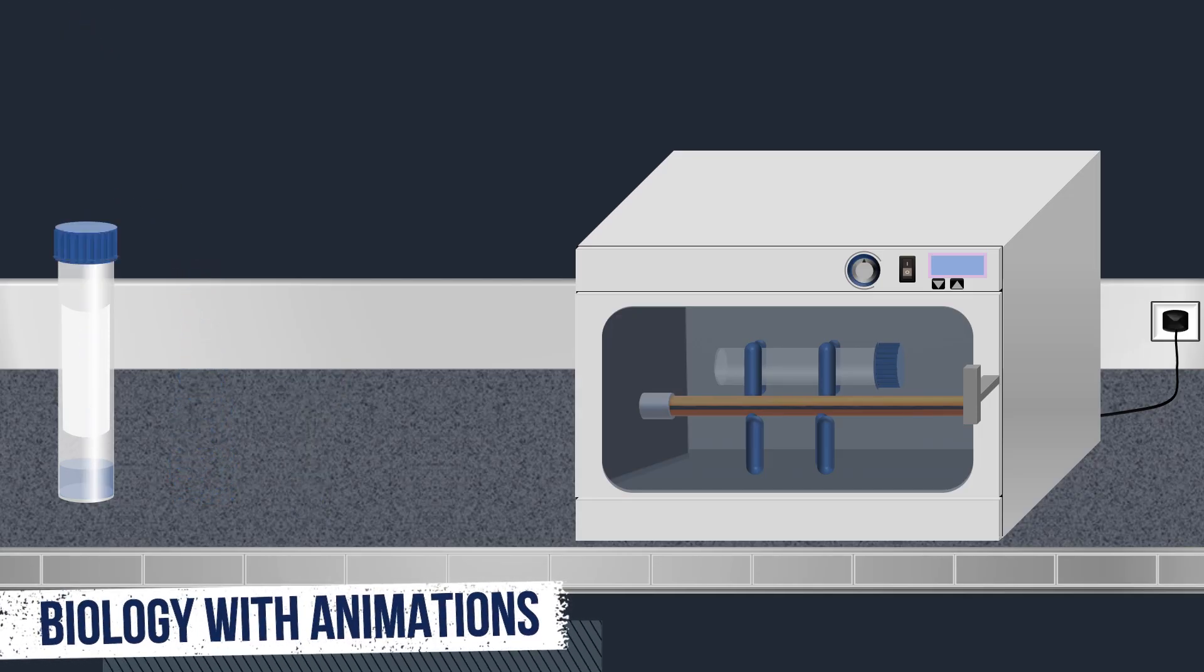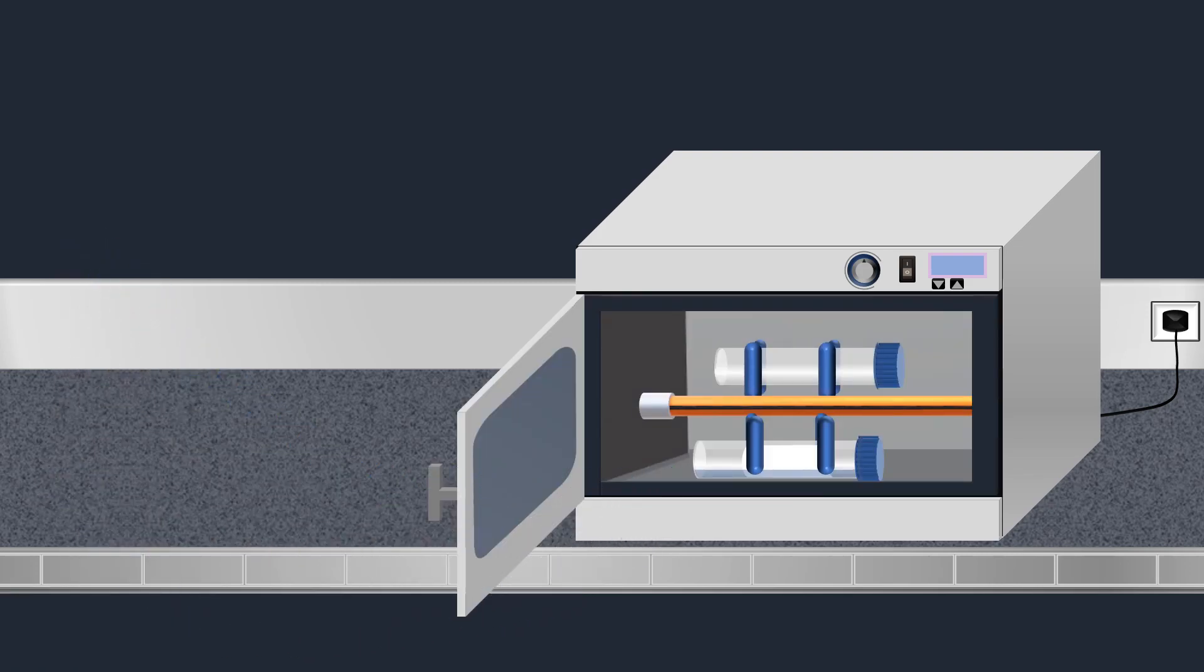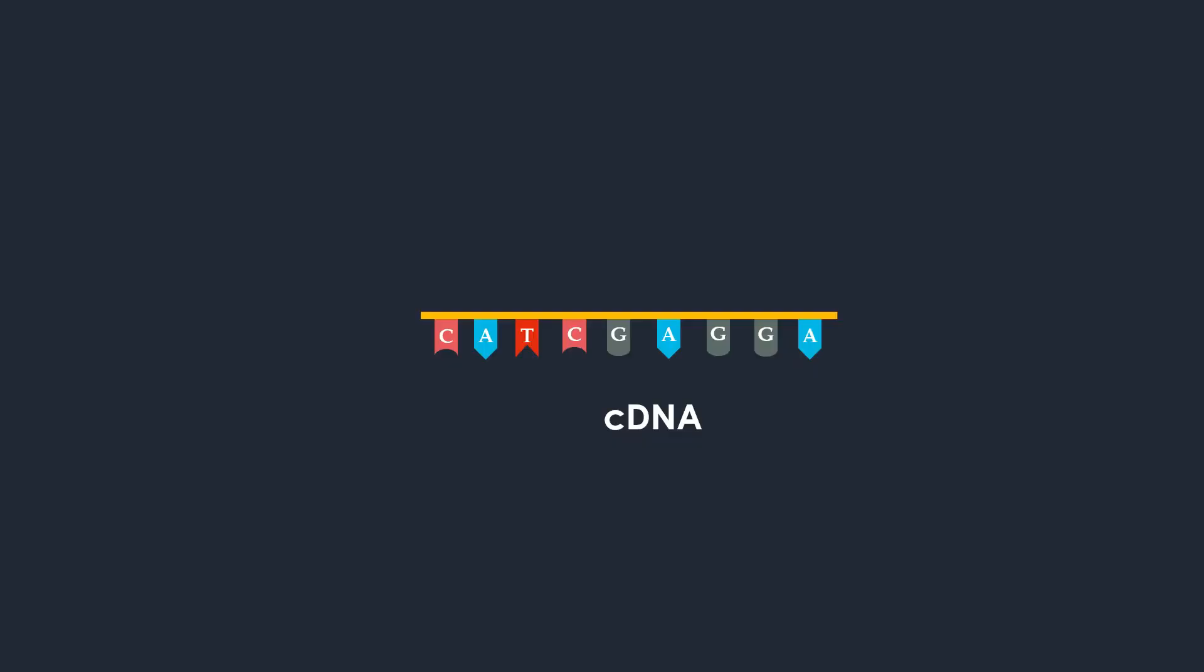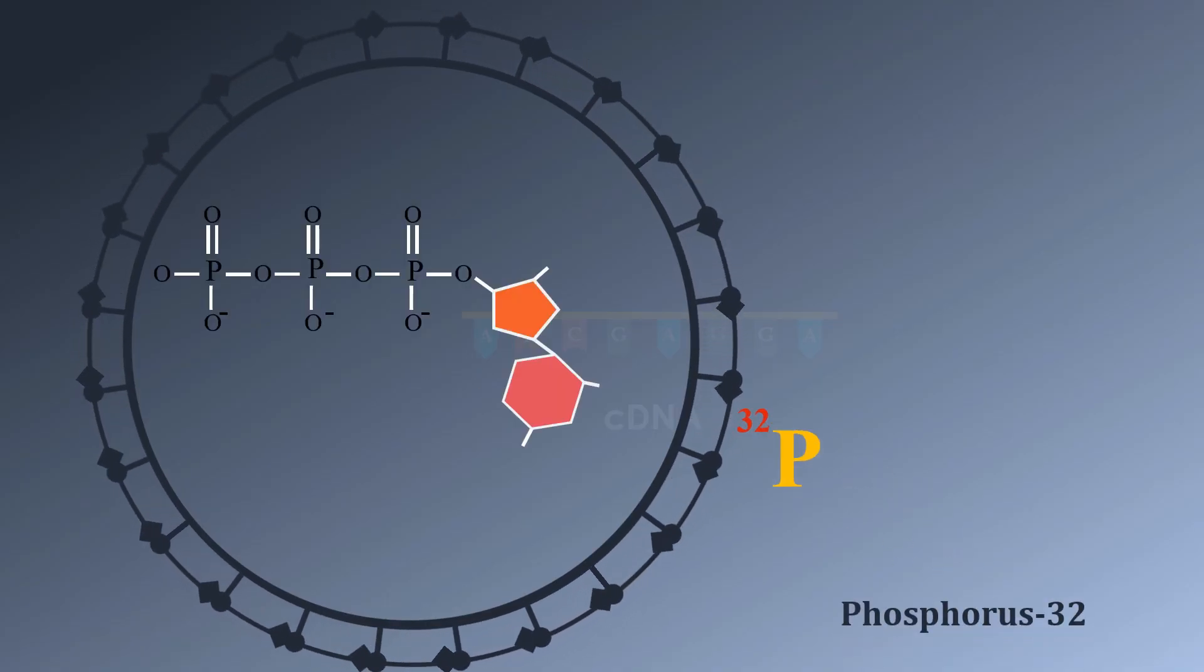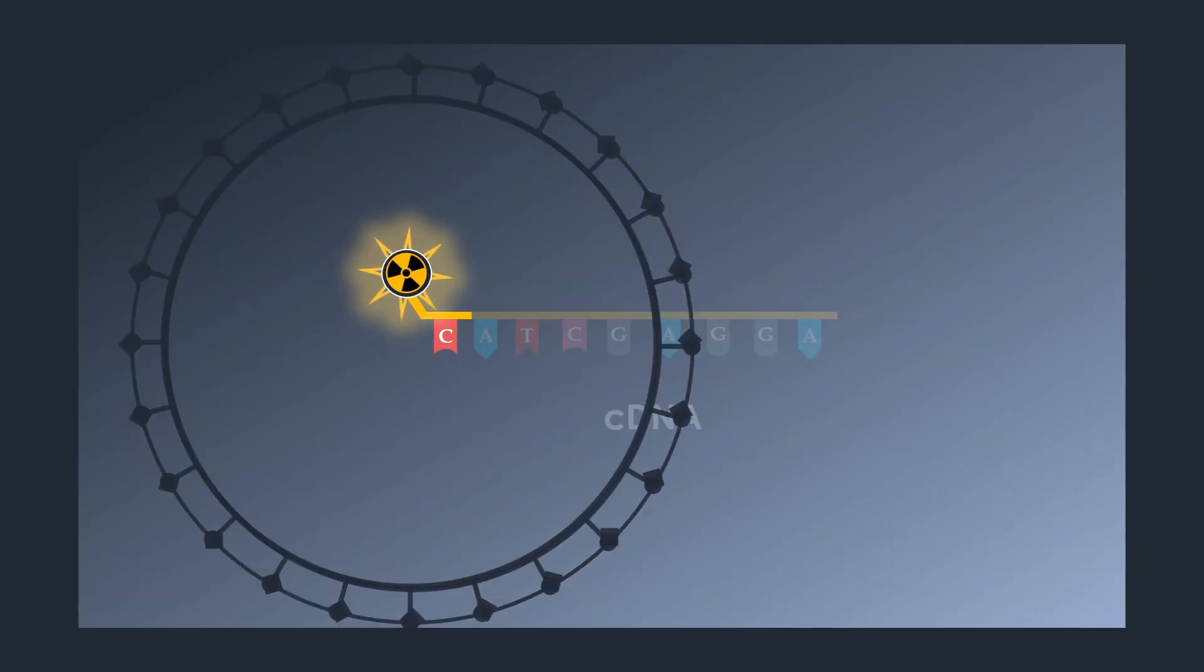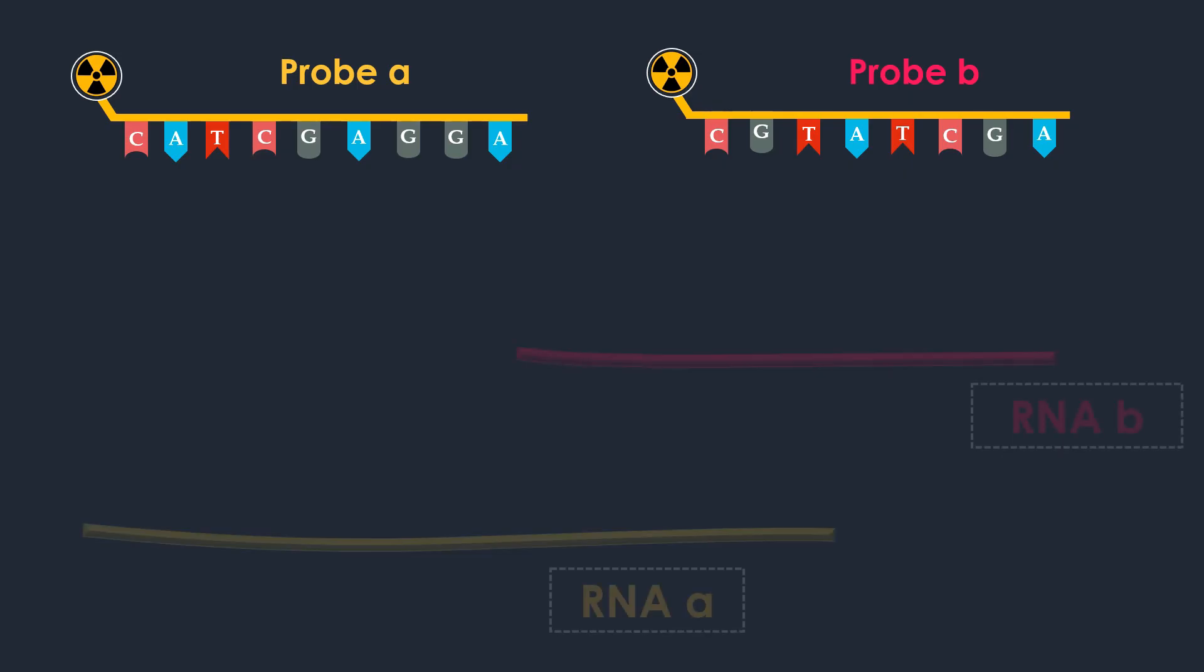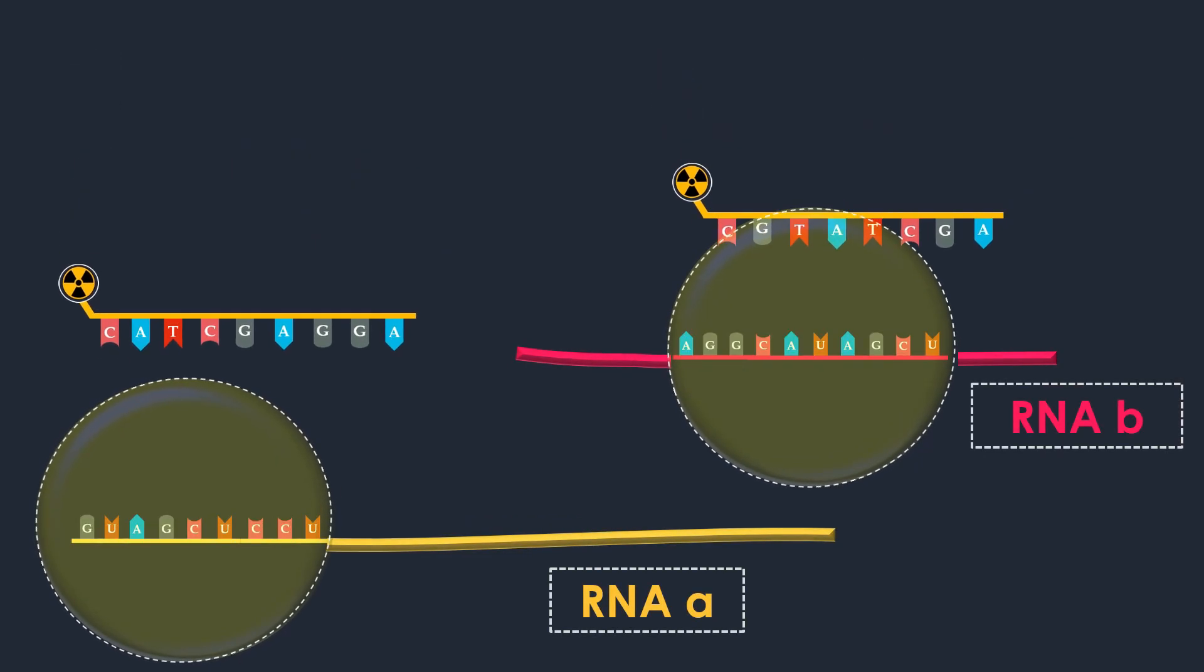Once the hybridization probes are added, the bottle is incubated overnight in the hybridization oven at 42 degrees Celsius. DNA contains a large quantity of phosphorus in the phosphodiester linkages between nucleotides in the oligonucleotide chain. DNA can therefore be tracked by replacing its non-radioactive phosphorus with radioactive phosphorus-32. The radioactively labeled DNA probes hybridize to their complementary sequences in the RNA molecules.